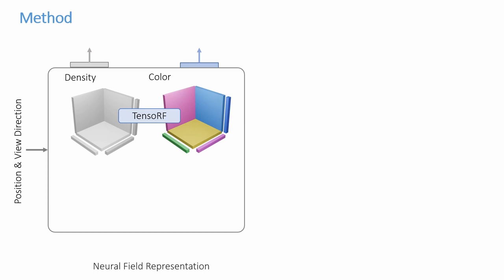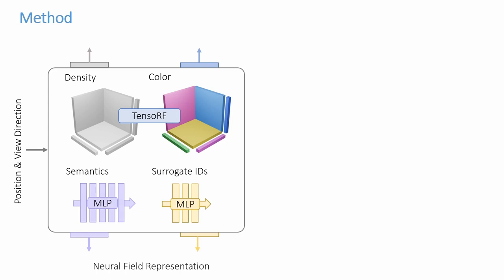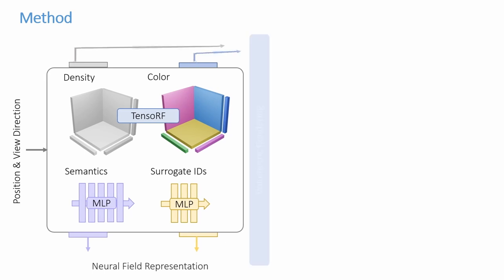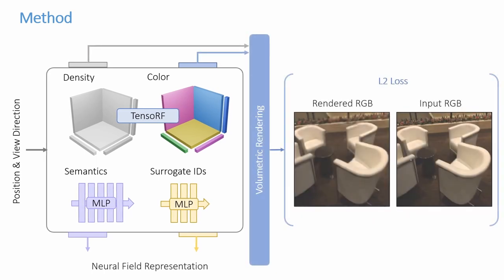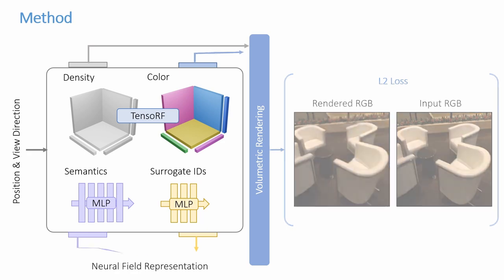To represent a scene, we use a tensor to model the scene density and radiance. The semantic and surrogate identifiers are modeled using small MLPs. As in previous NeRF-based approaches, the radiance field is supervised with an L2 loss on the rendered rays.